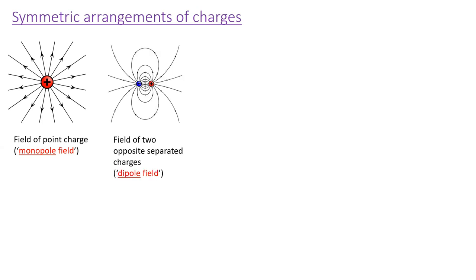You've probably also seen the field of two oppositely charged separated charges, which is called the dipole field — 'di' for two — a negative charge on the left and a positive charge on the right. The field lines go from the positive charge to the negative charge and spiral around in this way, which looks kind of like a spider, so I put a little Spider-Man up here just for fun.